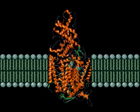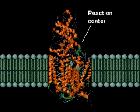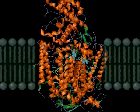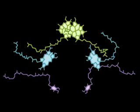Within the reaction center protein are a pigment and several electron carriers. This pigment, bacteriochlorophyll, absorbs light and passes excited electrons to the electron transfer chain.